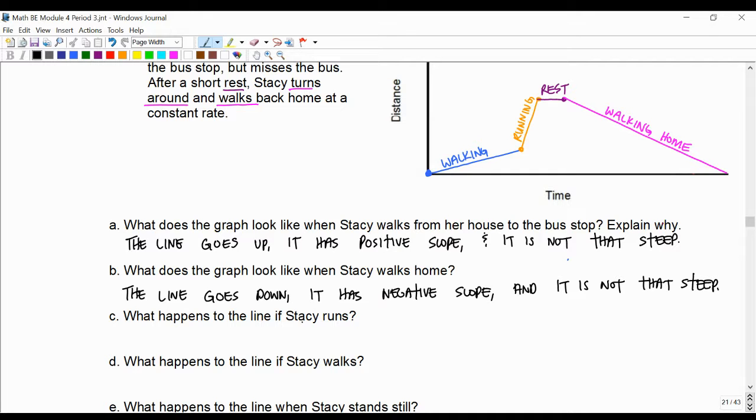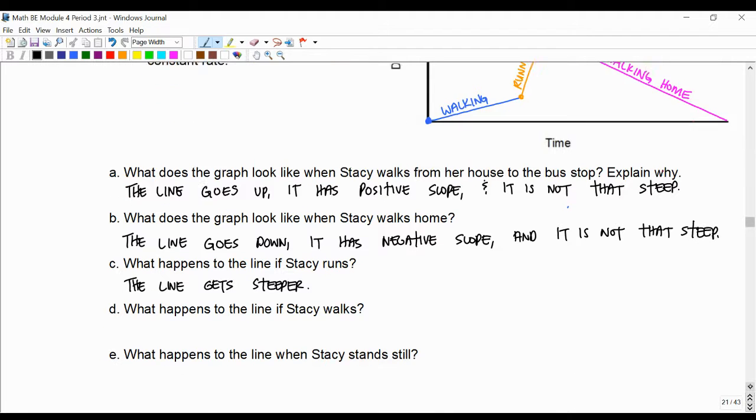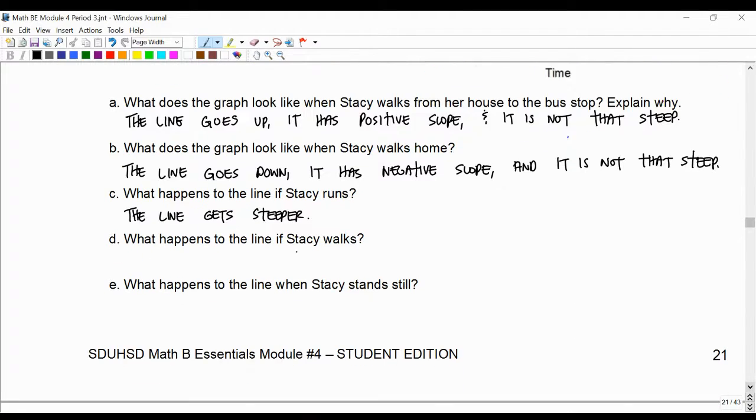What happens to the line if Stacy runs? Well, running, we're looking for a steeper line. And the line gets steeper. So orange is steeper. She could be actually running, and it could go up if she's running away from home, or it could go down, but that never happened. She never ran back home, so we never saw that.